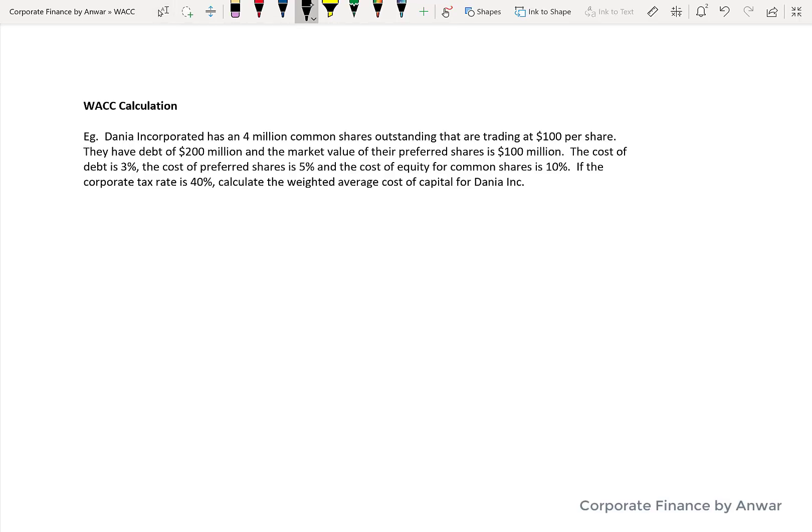Since we've done a formula for weighted average cost of capital, let's do an example of a company and calculate their weighted average cost of capital. Here's a situation where Dania Incorporated has 4 million common shares outstanding trading at $100 a share, debt of $200 million, and market value of their preferred shares is $100 million.